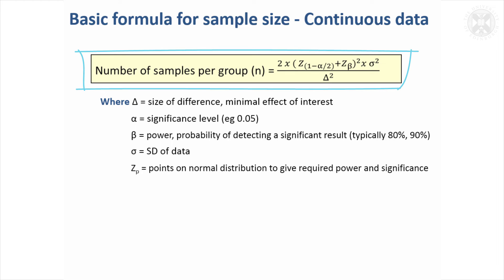This is the basic formulae for calculating the number of samples you need per group. So you'll see these things that I described are all in the formulae. You've got the delta, which is the size of the difference to detect, the minimal effect that's of interest to you, standard deviation. Alpha and beta come into these z-statistics, which I'll explain in a minute. Basically the z-statistics are points on what's known as a normal distribution required to give the required power and significance. I'll show those in a second. They're not really difficult. They're actually fixed values you can just put in. So it's not really making the formulae that much more difficult.